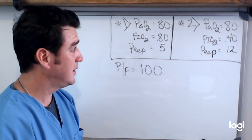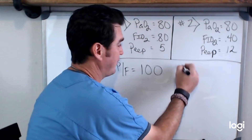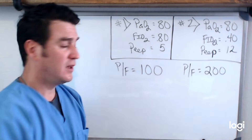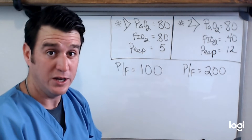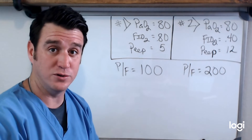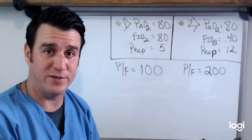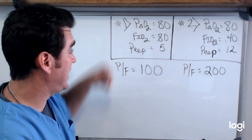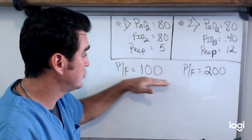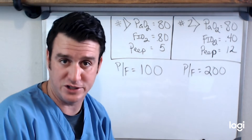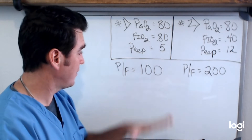This is not a good PF ratio. When we look at patient number two, we see a PaO2 of 80 divided by 0.4 gives us a PF ratio of 200. Still not a good PF ratio, but it's twice as good as patient one's. When you're talking about a PF ratio, you divide your PaO2 by your FiO2. This is an indicator of how efficient that FiO2 is working to achieve that PaO2. So our PF ratios are 100 versus 200.